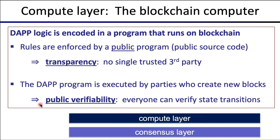We actually have what's called public verifiability, where anyone can look at the chain and verify that the program is executing correctly. The source code for the program is public, and all the state transitions — all the execution of the program — are public as well, so everyone can verify that the program is correct and being executed correctly. This is the beauty of running programs on the blockchain: you don't have to trust anyone to run your program correctly.